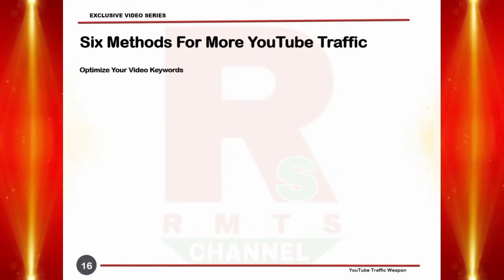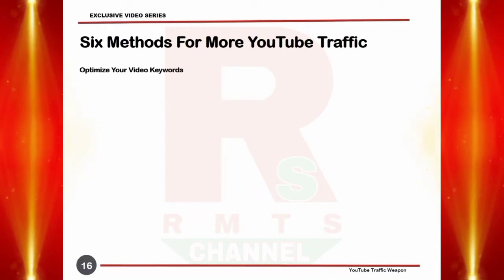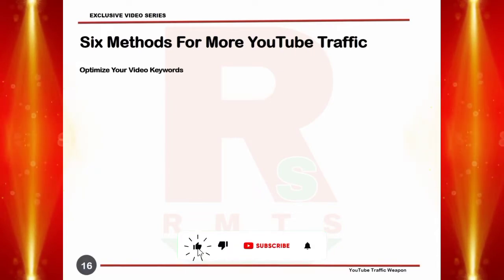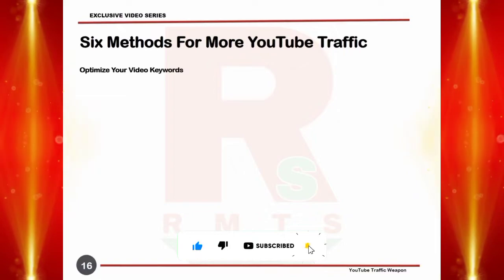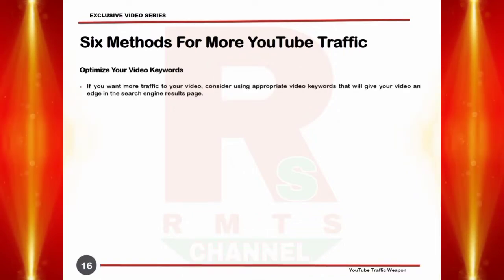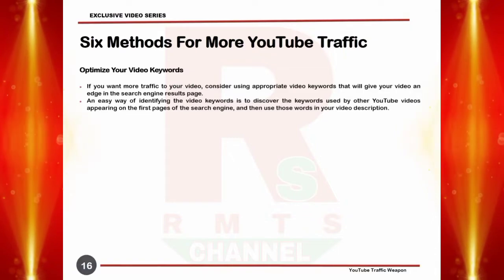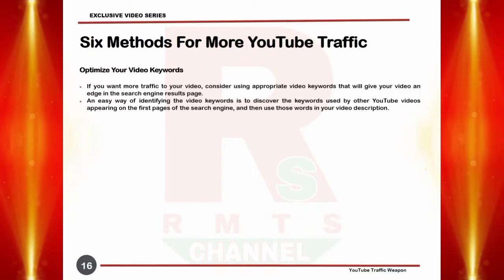Tip four: optimize your video keywords. Although it pays to have a good YouTube ranking, it is more rewarding if the classification extends to Google and search engine searches. It is obvious that many websites' traffic comes from search engines like Google, which create page rankings dependent mainly on the keywords used. Therefore, if you want more traffic to your video, consider using appropriate video keywords that will give your video an edge in the search engine result page. An easy way of identifying video keywords is to discover the keywords used by other YouTube videos appearing on the first pages of the search engine, and then use those words in your video description.